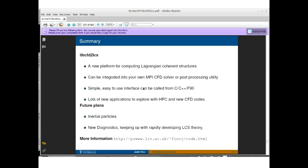To summarize, we've talked today about libcfd2lcs, which is a new platform for computing Lagrangian coherent structures. Crucially, this has the capability to be integrated into your own MPI CFD solver or post-processing utility. I think it's quite simple, relatively easy to use interface. It's flexible enough that it can be developed in a variety of solvers and can be called from C or C++ or Fortran. I think this is exciting because there's really lots of new applications that we can explore now using HPC and a variety of CFD codes. Moving forward, I'm hoping to be able to continue to develop this project and include things like inertial particles to understand dynamics of those in inertial Lagrangian coherent structures, as well as some of the newer diagnostics and keeping up with developing theory as it continues to evolve.